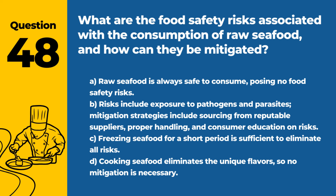Question 48. What are the food safety risks associated with the consumption of raw seafood, and how can they be mitigated? a. Raw seafood is always safe to consume, posing no food safety risks. b. Risks include exposure to pathogens and parasites. Mitigation strategies include sourcing from reputable suppliers, proper handling, and consumer education on risks. c. Freezing seafood for a short period is sufficient to eliminate all risks. d. Cooking seafood eliminates the unique flavors, so no mitigation is necessary. Answer: b. Risks include exposure to pathogens and parasites; mitigation strategies include sourcing from reputable suppliers, proper handling, and consumer education on risks. Safe sourcing and handling are essential for reducing food safety risks in raw seafood.